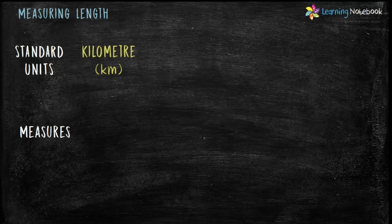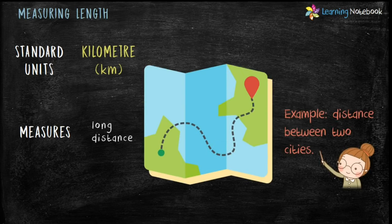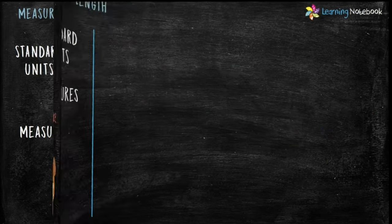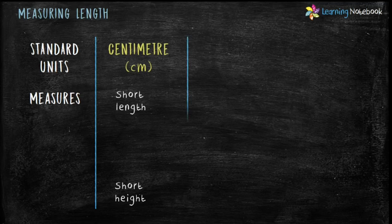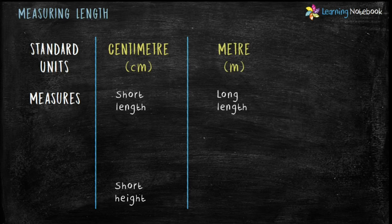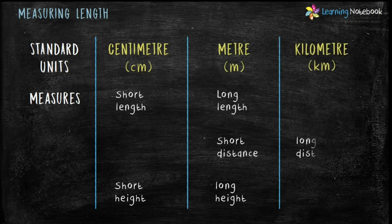The next standard unit to measure length is kilometer. In short, kilometer is written as km. Kilometer is used to measure long distance — for example, distance between two cities is always measured in kilometers. To summarize: centimeter is used to measure short length and short height; meter is used to measure long length, short distance, and long height; and kilometer is used to measure long distance.